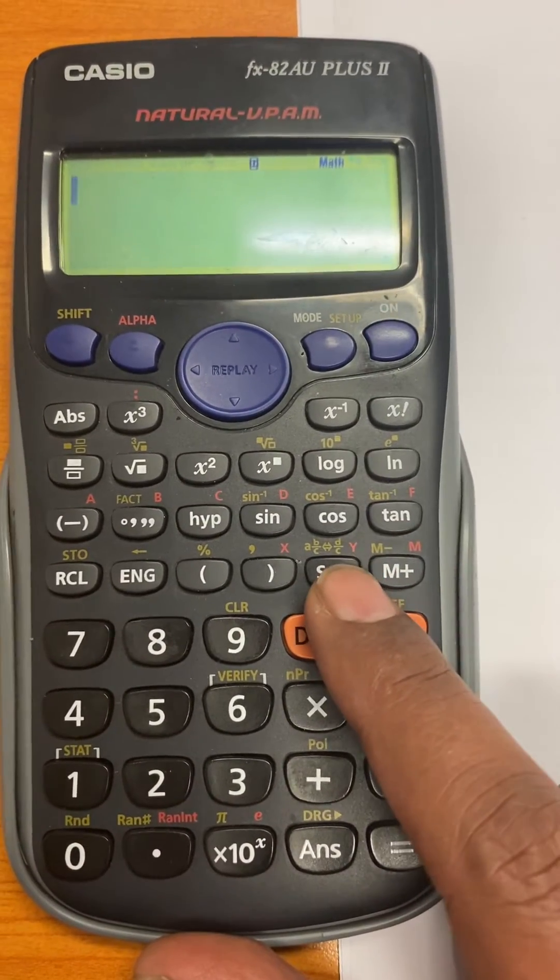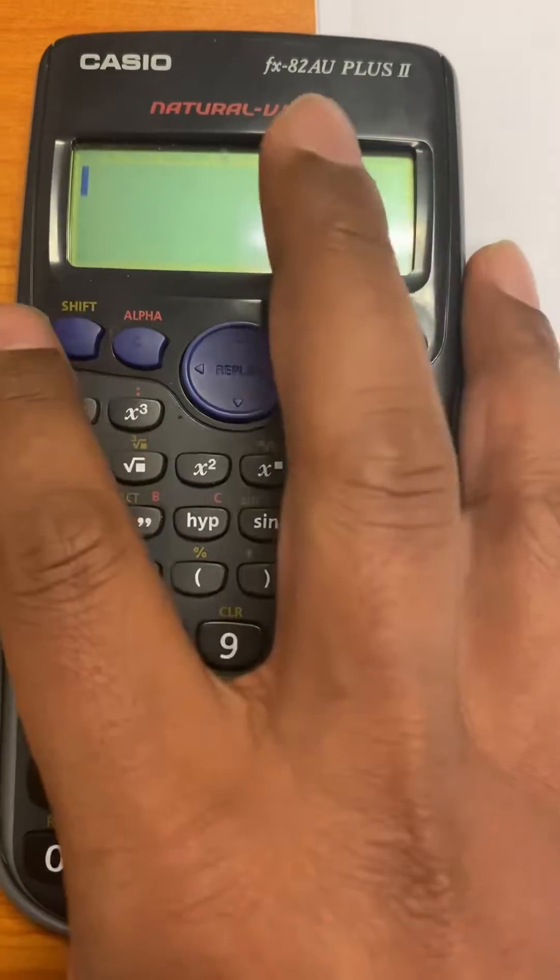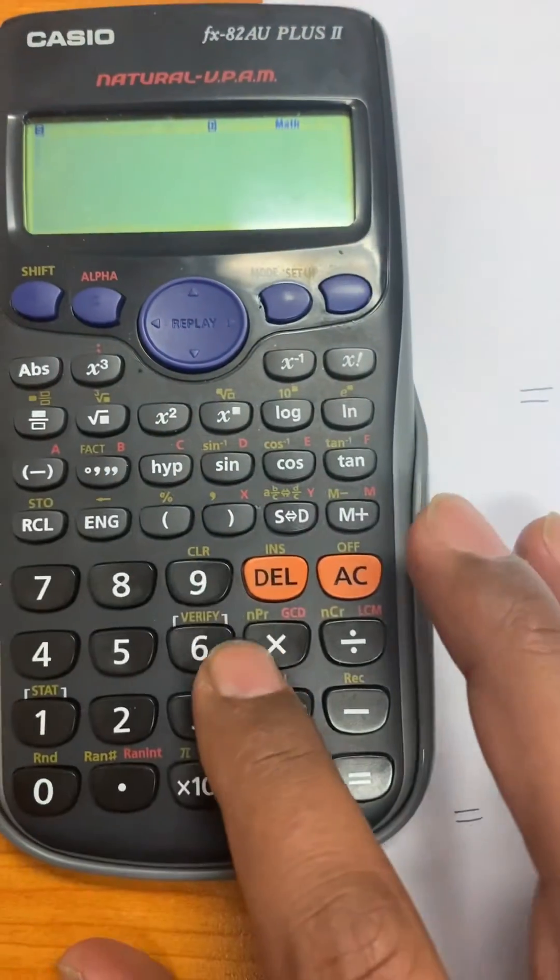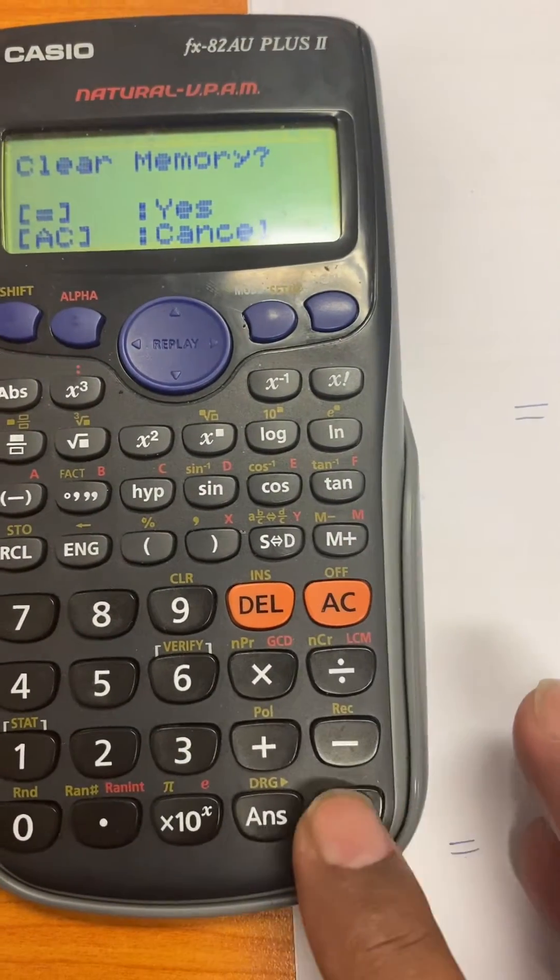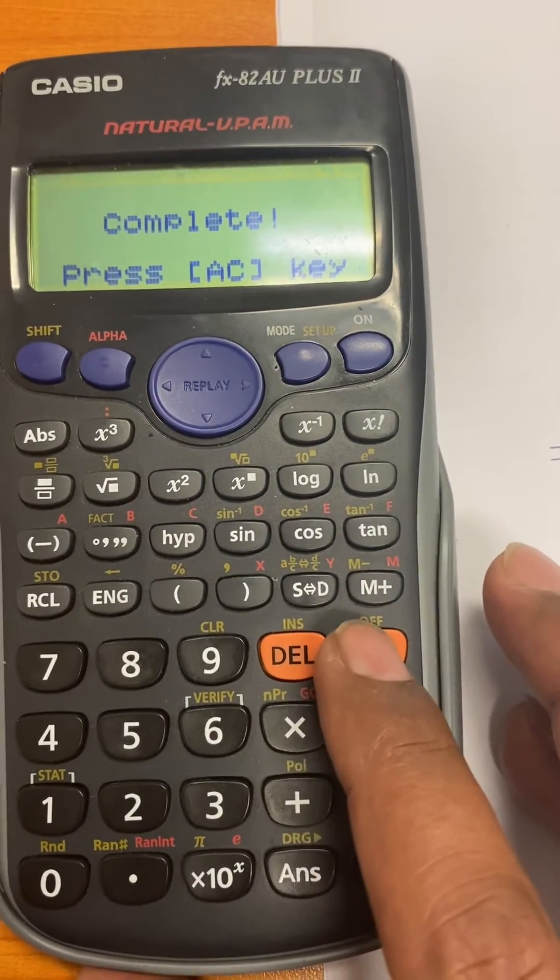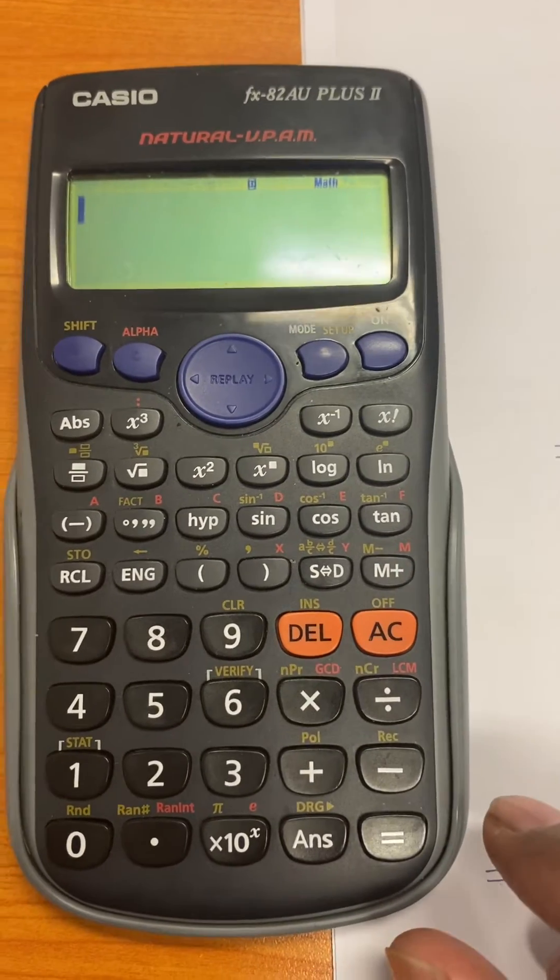But it helps you to do that. So again, if you want to clear the memory, just press shift here, press 9 here. Remember to clear the memory and not the setup, so press 2 here and then press the equal to sign. It clears the memory, so when you press the all clear key you are again good to start as a fresh application.